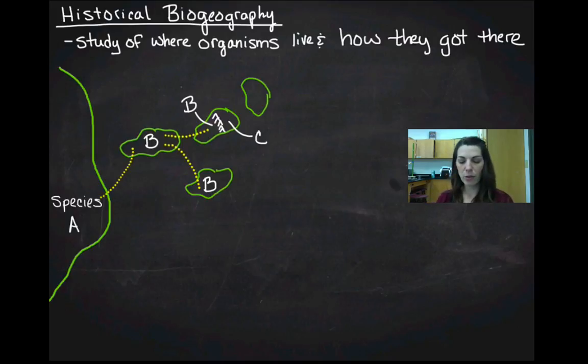So species B gets to the first side of the island, and on that left-hand side of the island we'll just say it's really similar ecological conditions to the first island. And so species B is going to stay species B. There's going to be some gene flow, they'll swim back and forth, all the same species.